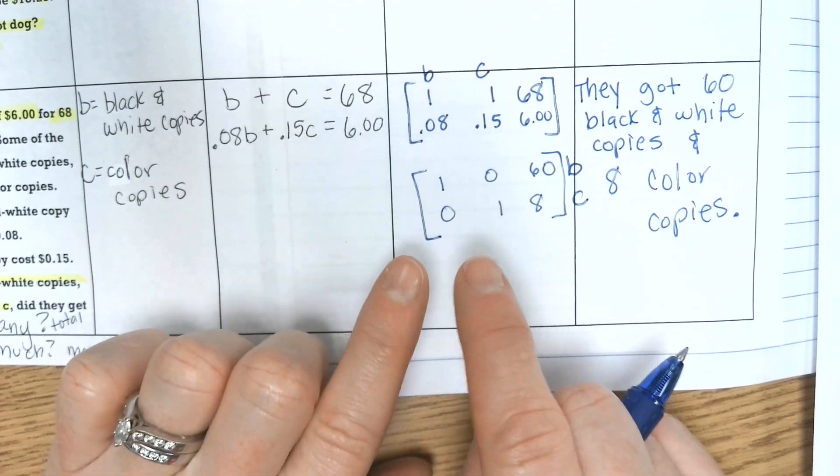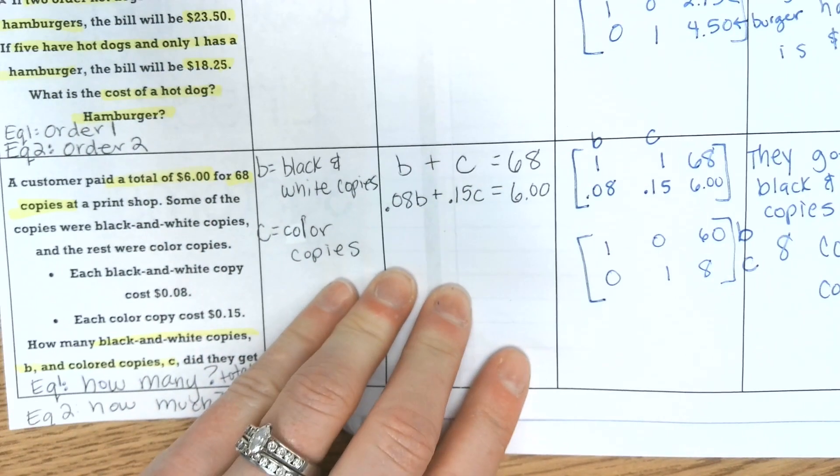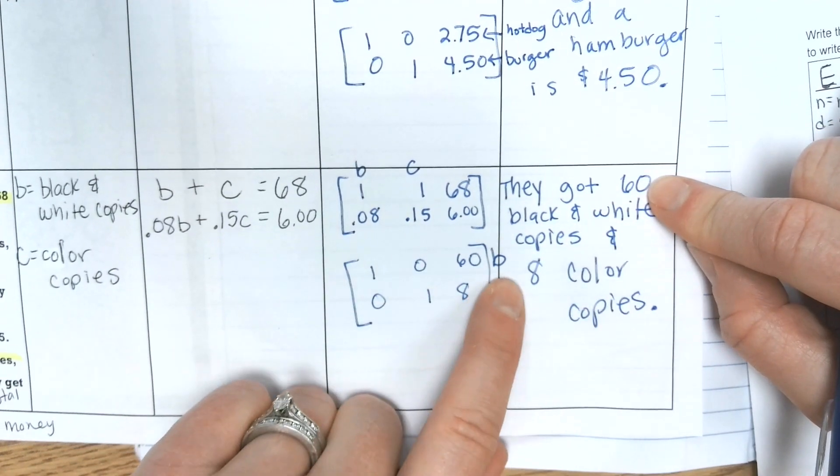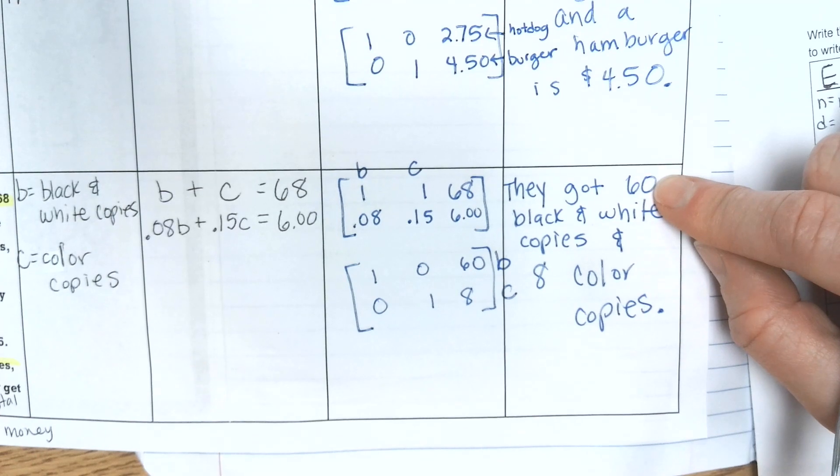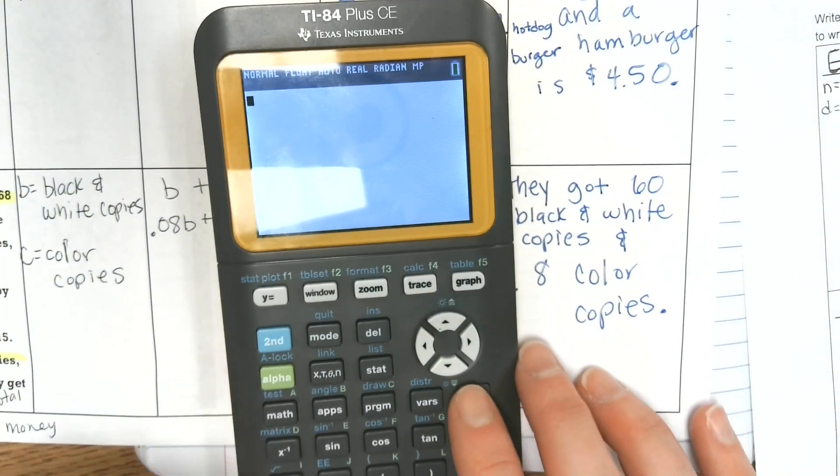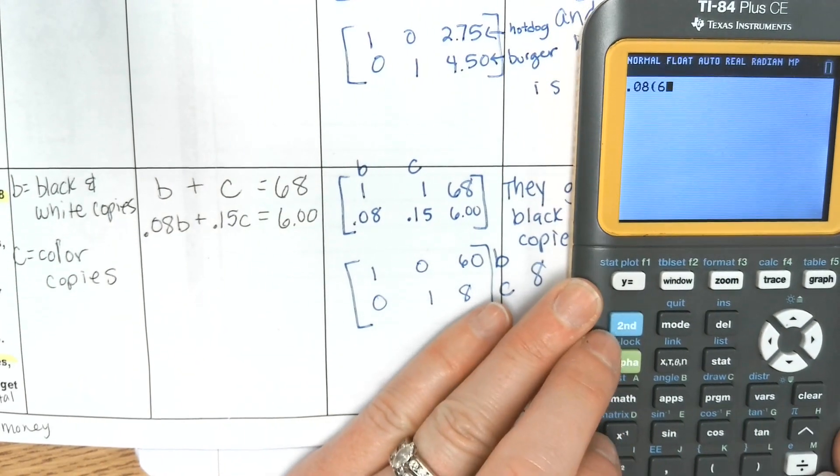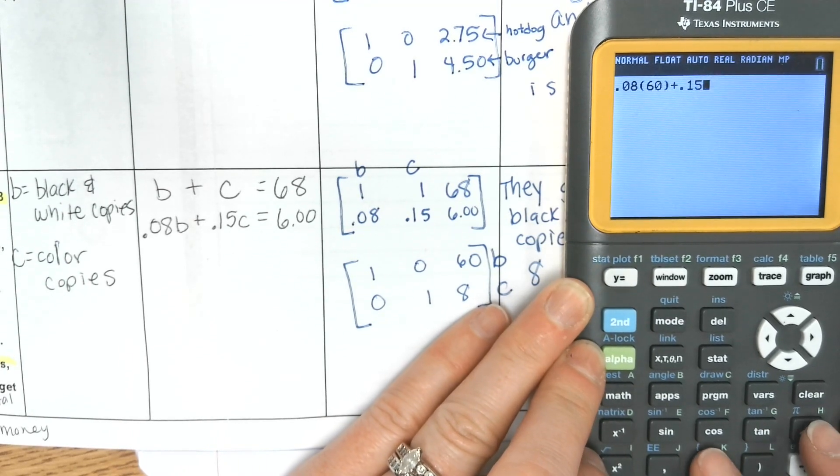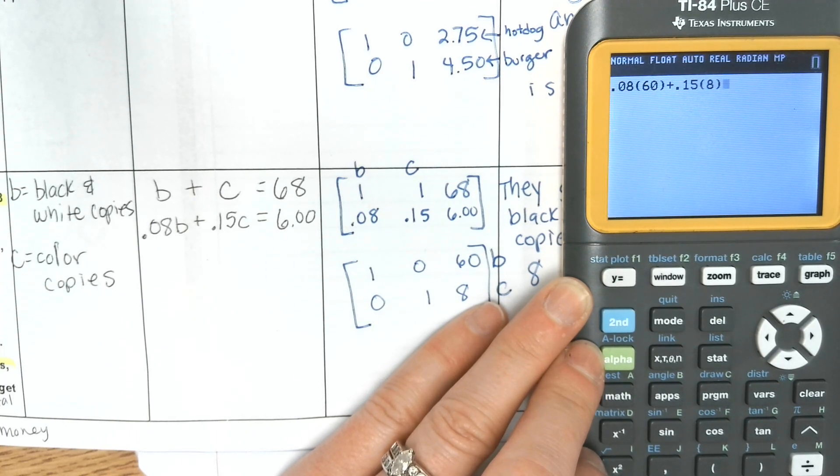The last thing you do want to do is kind of make sure it makes sense. So if we look at the black and white copies, it said had a total of sixty-eight copies. Well, if you add eight, sixty plus eight, you get sixty-eight. So that makes sense. Sixty-eight total pieces of paper that they bought of their copies. And then six dollars, so what you could do is just make sure that it's eight cents for the sixty black and white copies, plus the fifteen cents for the fifty-eight color copies,